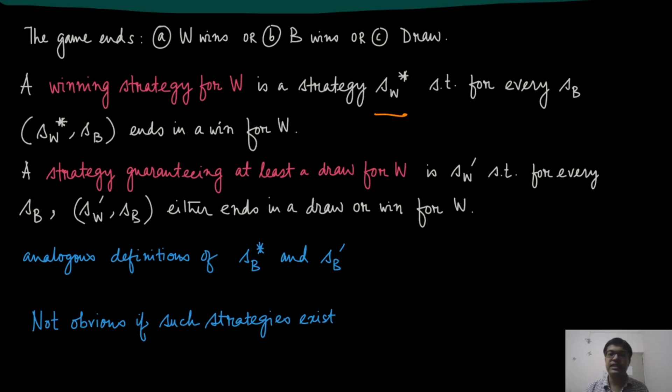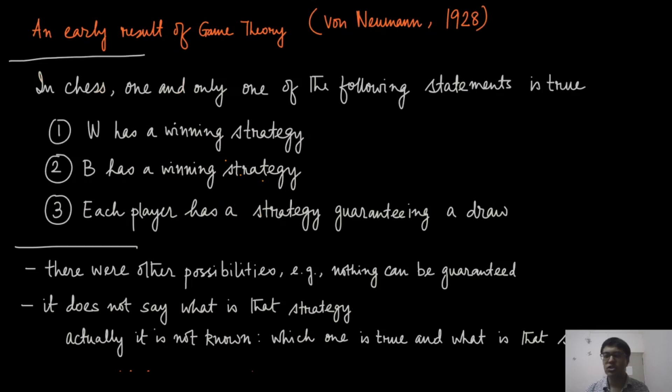Now, the strategy guaranteeing at least a draw for W will denote this with the notation S_W'. And this is saying the very analogous thing for every strategy of S_B, every strategy of the black player, the S_W' and S_B will end in a draw or a win for the white player. And you can also define the similar thing for the black player as well. Now, it is not clear whether this kind of strategies exist. So, that is the first question, existential question.